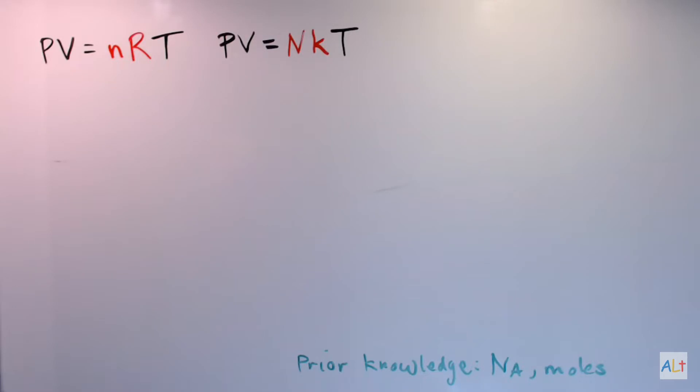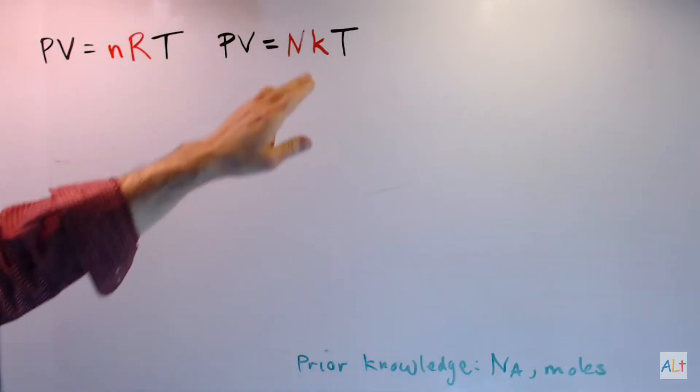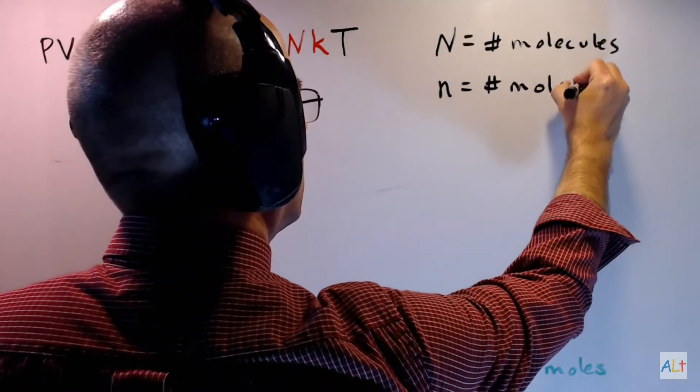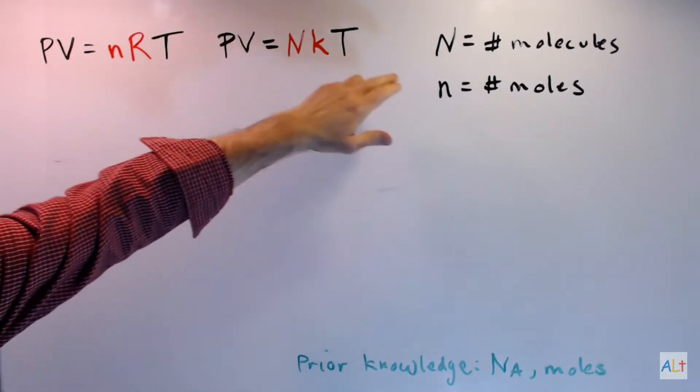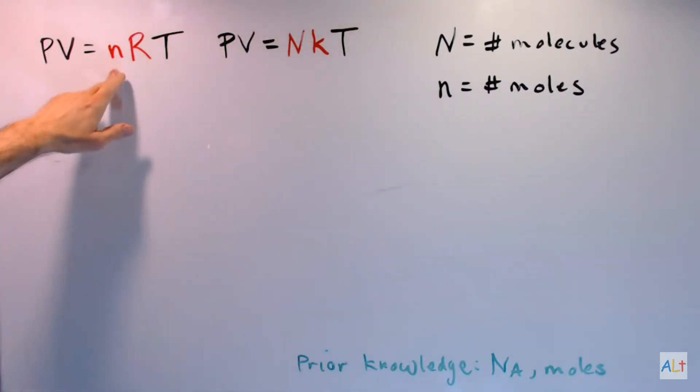How do you know which to use when? Well, that's the easy question as long as you know what N or n stands for. Capital N stands for number of molecules. Lowercase n stands for number of moles.